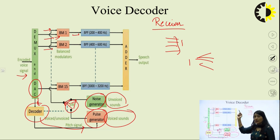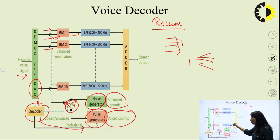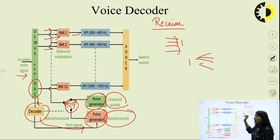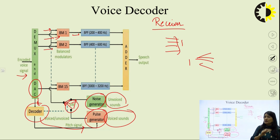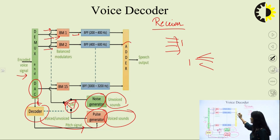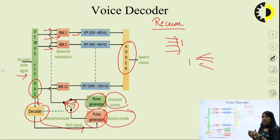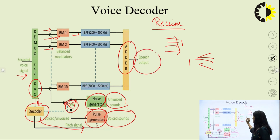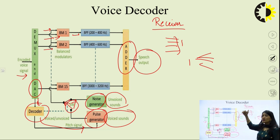Then we have again band pass filters — a total of 15 band pass filters — and then we have an adder. Because earlier we separated the signal, we need to collect all the signals. The adder sums up all the signals and provides one speech output. This is how the signal is decoded.